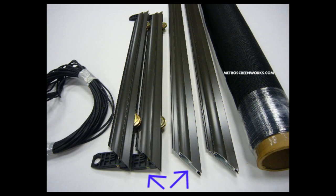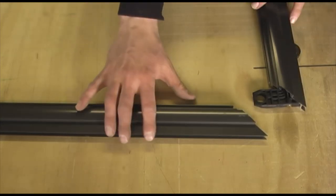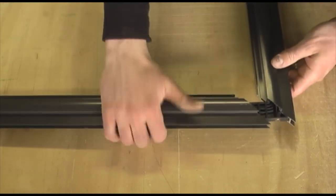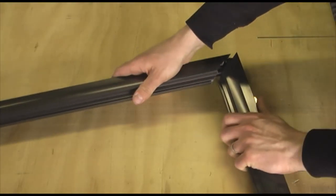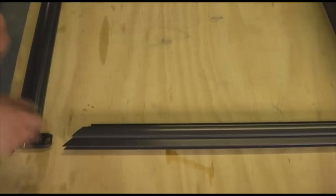The frame is pre-cut with the corners and rollers installed. This means that all you have to do is finish putting the screen frame together. All of your corners should fit together very easily.